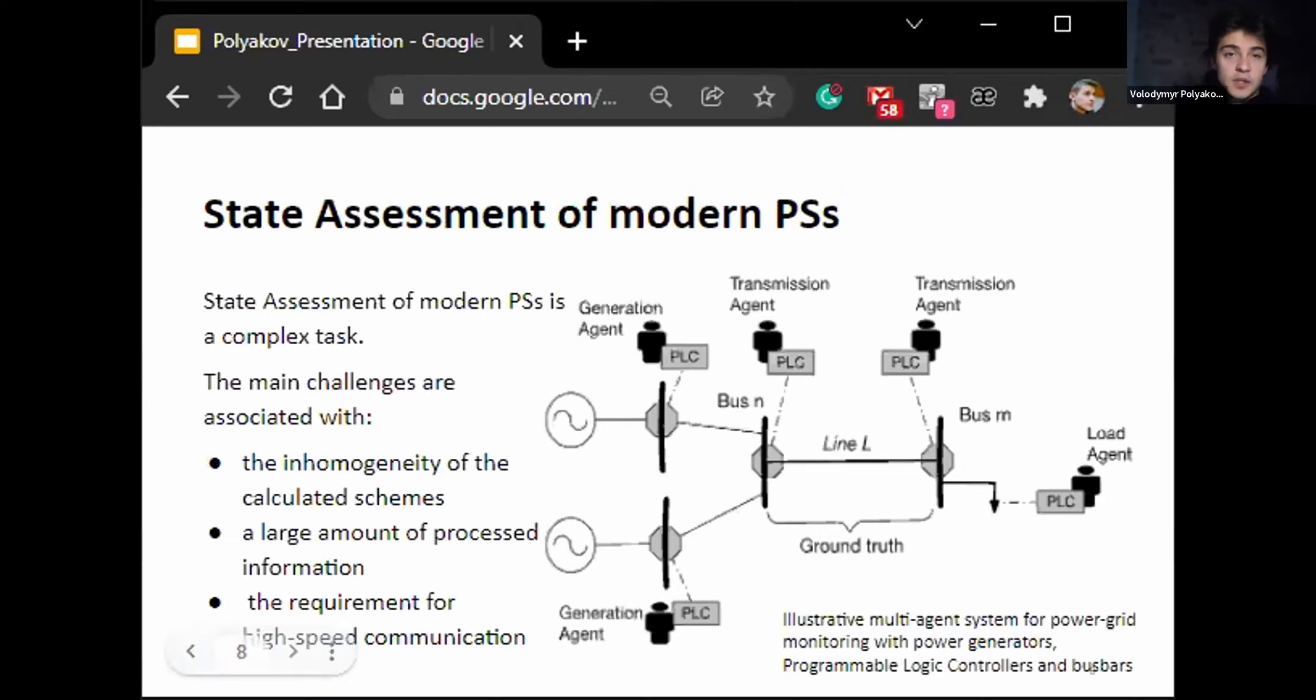The state assessment of the modern power system is a complex task. The main challenges are associated with inhomogeneity of the calculated schemes, a large amount of processing information, and the requirement for high-speed software. Distributed data processing in the decomposition of the state assessment task is an effective method for solving these problems. The problem can be split into two subtasks of detecting bad data containing large errors and estimating the state based on quadratic and robust criteria. It's usually solved using structural decomposition, breaking design scheme into subsystems, and functional decomposition. Multi-agent systems are a perfect choice for such a solution.